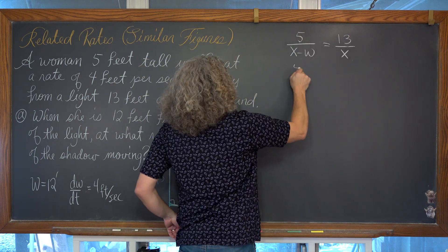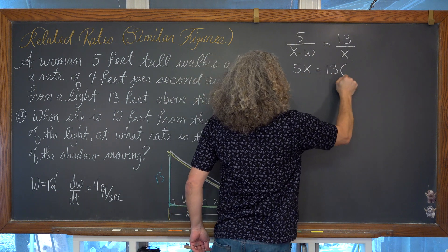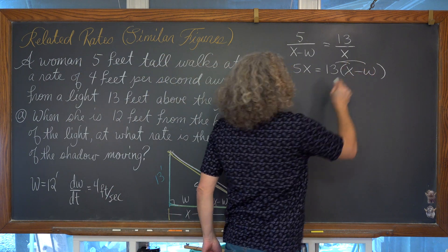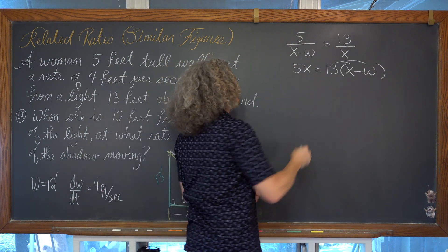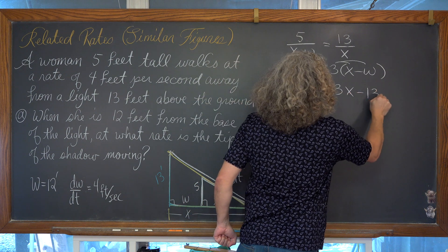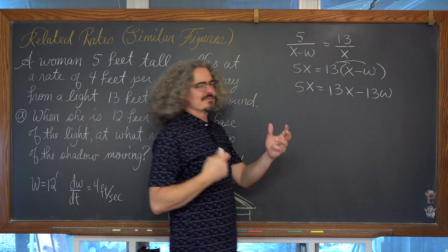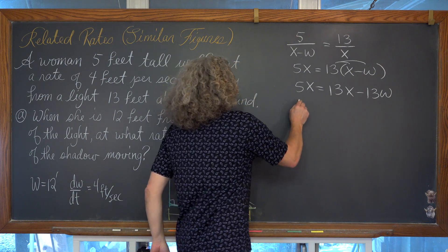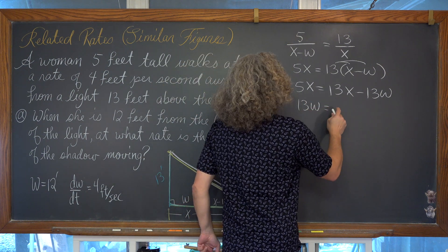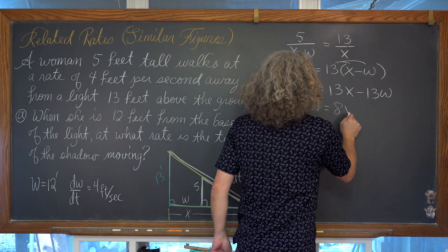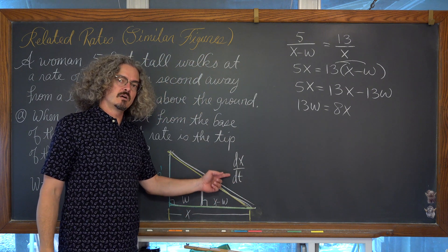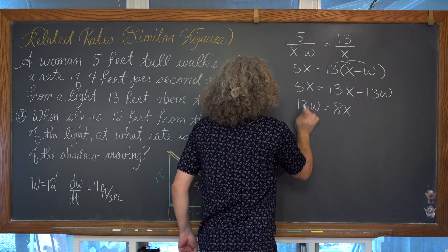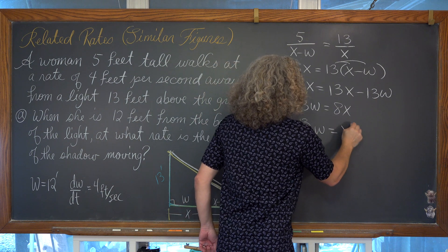We cross multiply and have 5x equals 13 times (x minus w). Distributing the 13 gives 5x equals 13x minus 13w. To get positive coefficients, we add 13w to both sides and subtract 5x from both sides, giving us 13w equals 8x. Since we're looking for the rate of change of x over time, we divide both sides by 8 and have x equals (13/8)w.